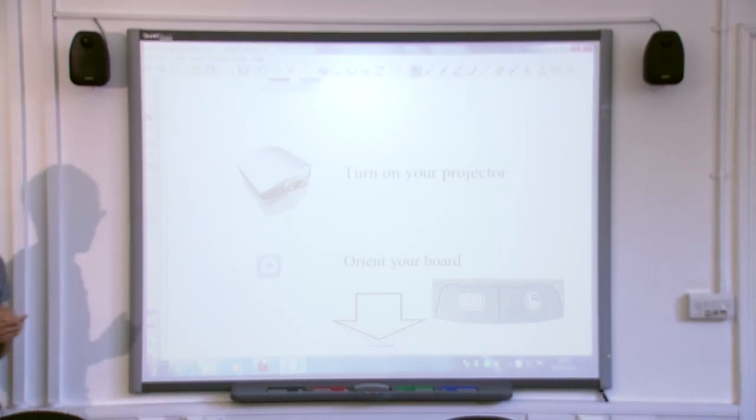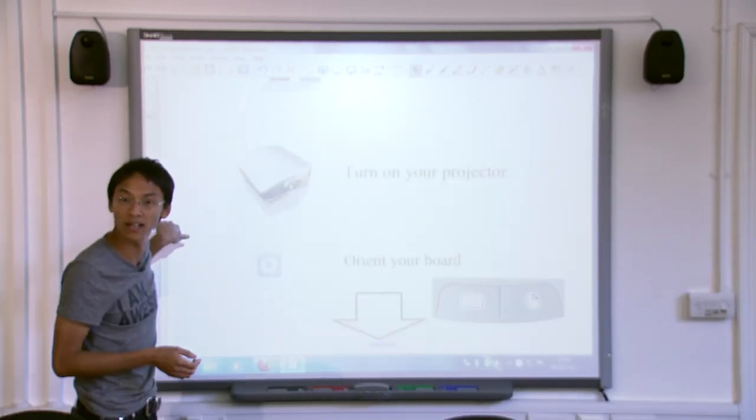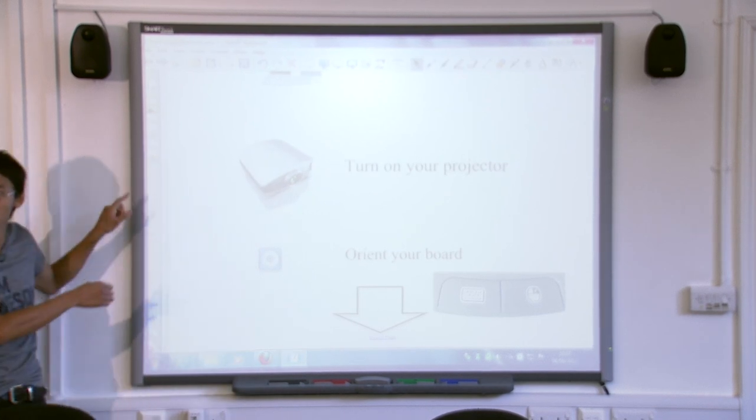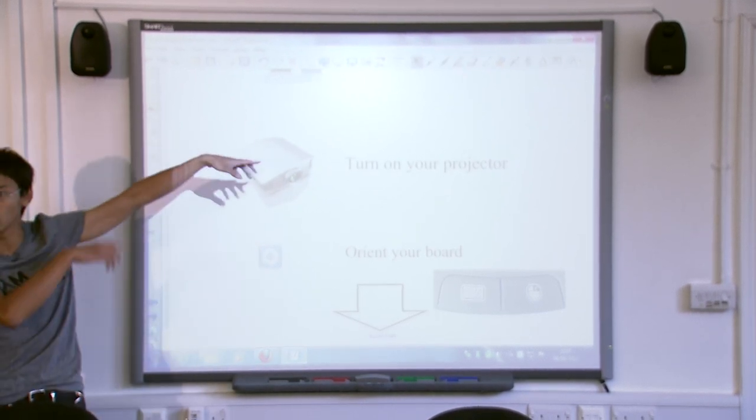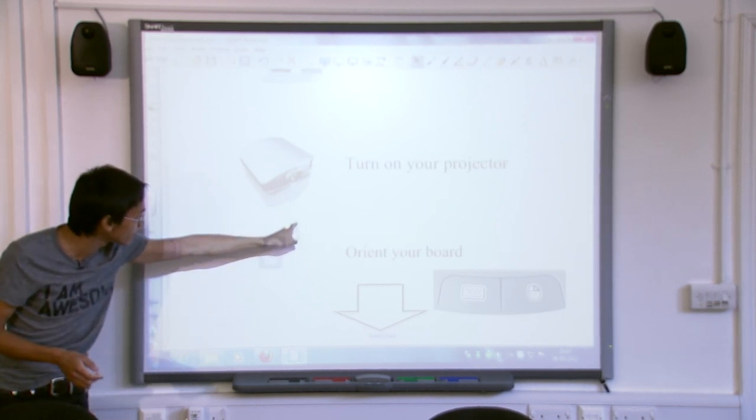So, the orientation process is very simple. You're just telling it, this is the top left-hand corner, this is a side corner thing, edge thing, this is a bottom left, middle, top, that sort of thing. So, now, my board should be a little bit more accurate.